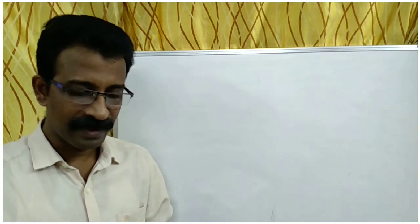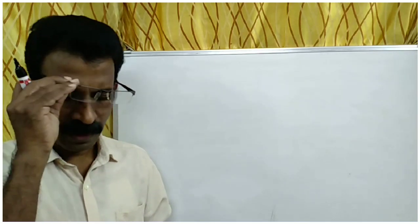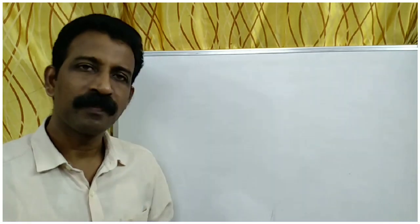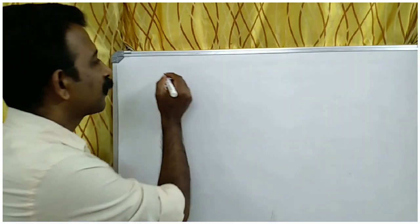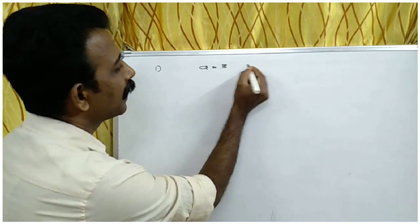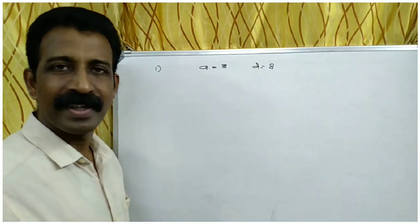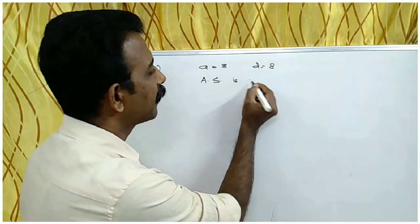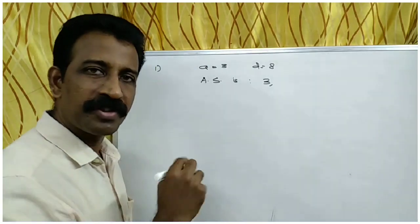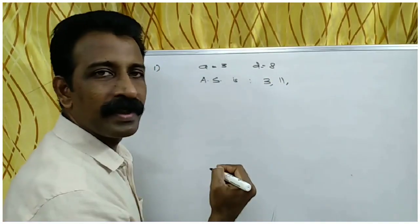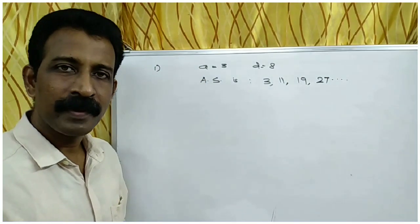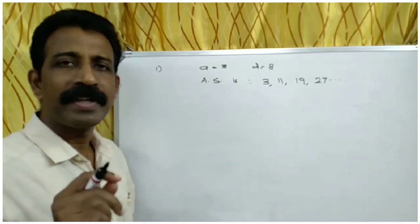What is the 25th term of this sequence? Then 11 plus 8 is 19, then 19 plus 8 is 27 — and so on. This is an arithmetic sequence. The second part of the question is: find the 25th term.